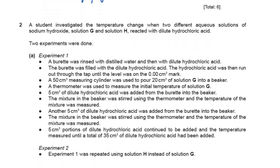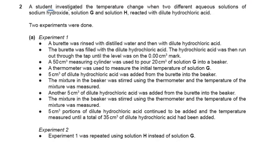Question 2 is a big question where a student investigated the temperature change when two different aqueous solutions of sodium hydroxide — solution G and solution H — reacted with dilute hydrochloric acid. Both solutions G and H are sodium hydroxide, and both are reacted turn-wise with dilute hydrochloric acid. The student is investigating the temperature change with these two different solutions. Steps of both experiments are shown and you can pause to read them.